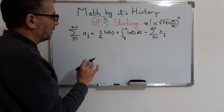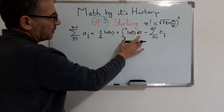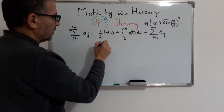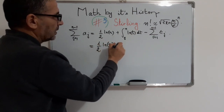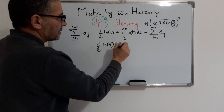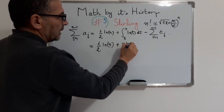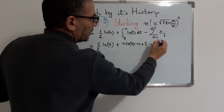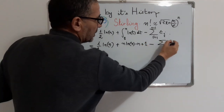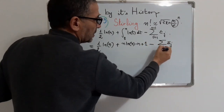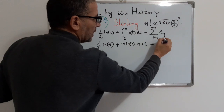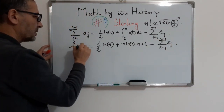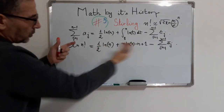Summing the parts above and integrating, we obtain: n·ln(n) minus n plus 1, minus the sum of epsilon_g from g=1 to n-1. Now we take the exponential of both sides of this equality.